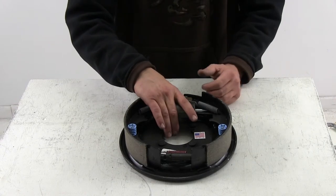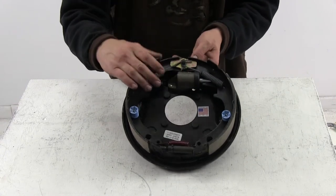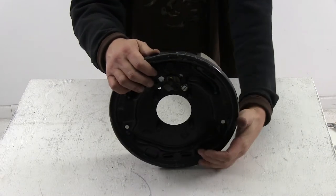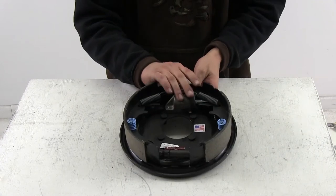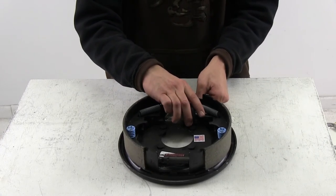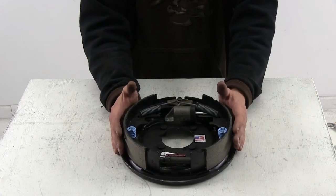Then as the linings wear down you'll also need to adjust that star wheel which can be done through the backing plate access hole to keep that light drag and keep the clearances between the shoe linings and the hub drum assemblies to a minimum.